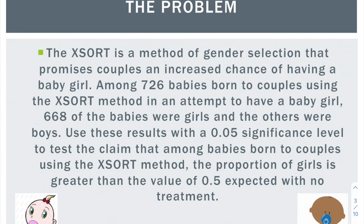The XSORT is a method of gender selection that promises couples an increased chance of having a baby girl. Among 726 babies born to couples using the XSORT method in an attempt to have a baby girl, 668 of the babies were girls and the others were boys. Use these results with a 0.05 significance level to test the claim that among babies born to couples using the XSORT method, the proportion of girls is greater than the value of 0.5 expected with no treatment. A couple things that tell us this is a proportion problem is the fact that they're saying out of 726 we have 668, so we're talking about like a percentage. And then at the end they literally use the word proportion in the claim. The proportion or percentage, those p words tell us that we're dealing with a proportion.